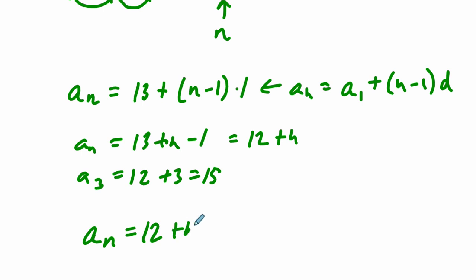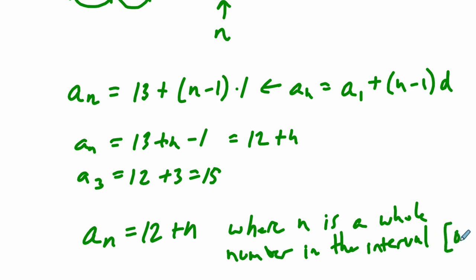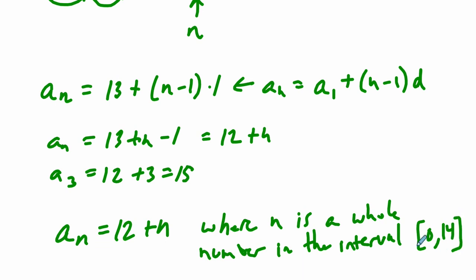But you say where n is any integer between, and n is, I'll say it this way: where n is a number of weeks, so it's a whole number. n is a whole number in the interval. I don't think you need to say any of this, but it could help. Between, what is it, 0 and I think it was 14 weeks. So you're just stating the values of n that work here. Alright, thank you.